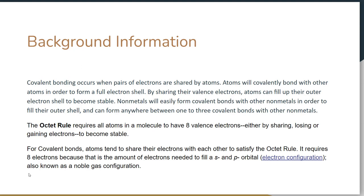The reason they share is so they can get a full outer level or fulfill the octet rule. Neither atom is strong enough to pull the electron away like an ionic bond, so they do the next best thing, and that is to share.